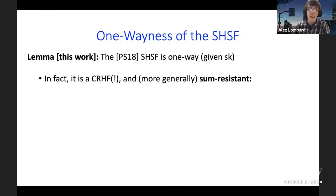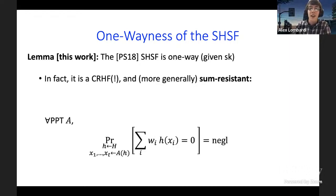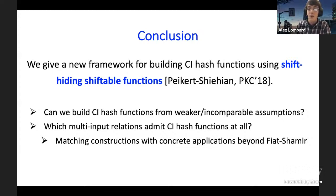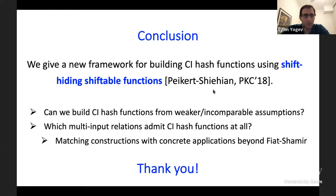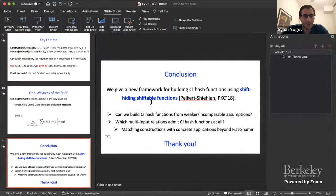To get multi-input results, we show the object is also collision resistant and more generally satisfies the property that it's hard to find inputs such that a fixed weighted linear combination of their hashes equals zero. This generalizes collision resistance and can be lifted to get f-dependent correlation tractability properties. Open problems include relying on weaker assumptions than LWE and understanding exactly what kinds of multi-input correlation tractability we can achieve.